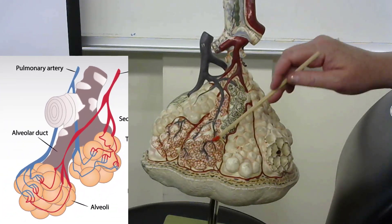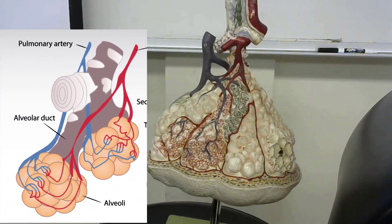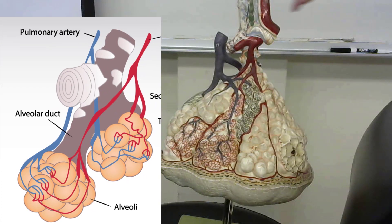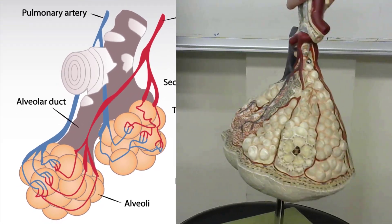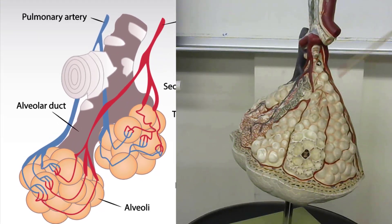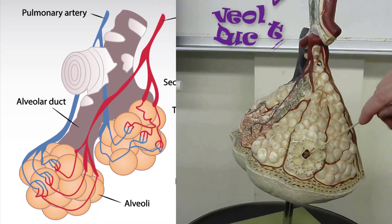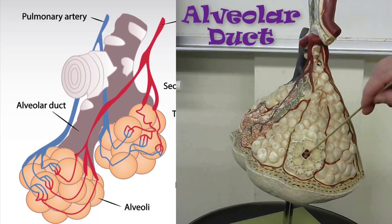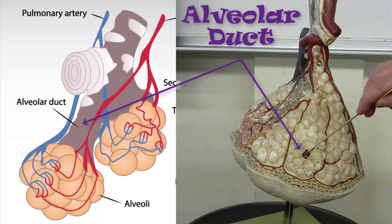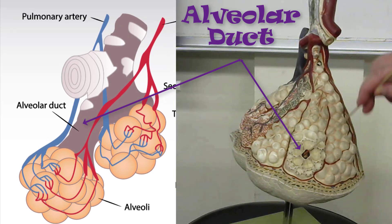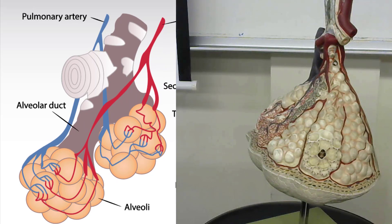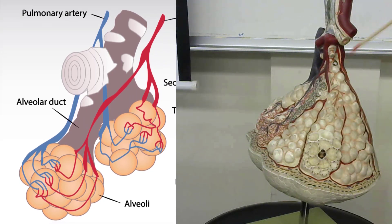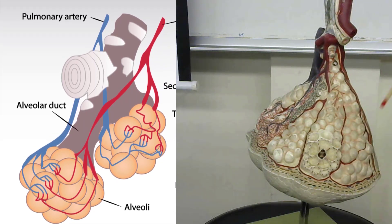The alveoli are organized somewhat like a bunch of grapes. Here we can see a section cut open to reveal a cross-section, showing an alveolar duct. An alveolar duct connects to many alveoli and serves as the passage for air.